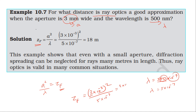Nine into 10 power minus 3 squared gives 9 into 10 power minus 6, divided by 5 into 10 power minus 7. That gives 18 by 10, with 10 power minus 6 divided by 10 power minus 7 giving 10 power minus 1 — the 10 cancels — so the Fresnel distance is 18 meters.